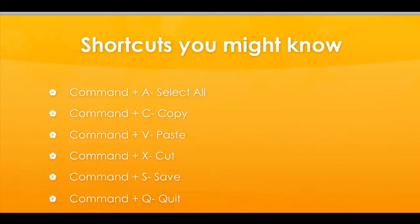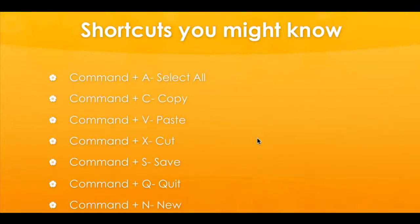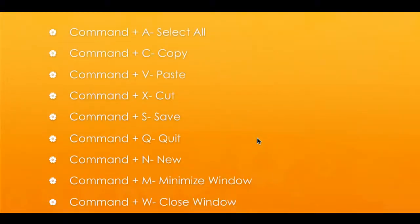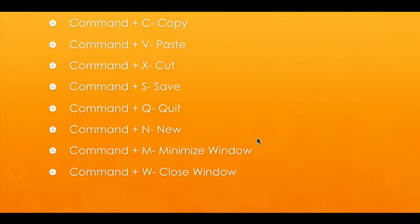These are some shortcuts that you might know, but if you don't, here they are. To select all, you would press Command plus A. To copy, it would be Command plus C. To paste, it would be Command plus V. To cut, it would be Command plus X. To save your document, it would be Command plus S. To quit, it is Command plus Q. For a new document, it would be Command plus N.